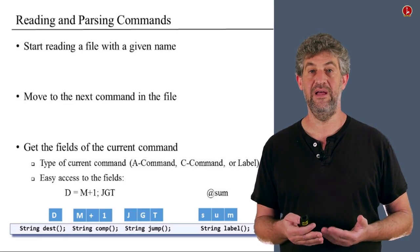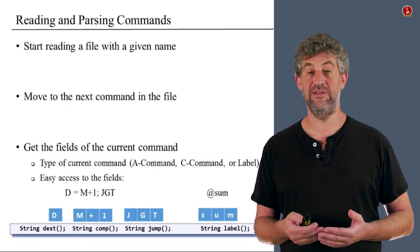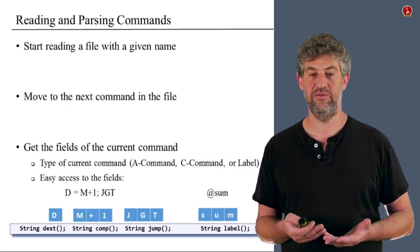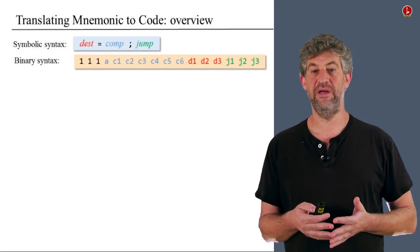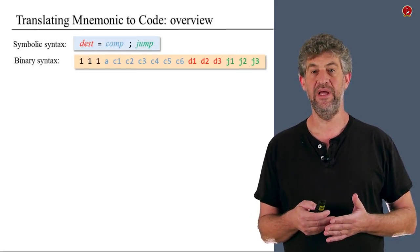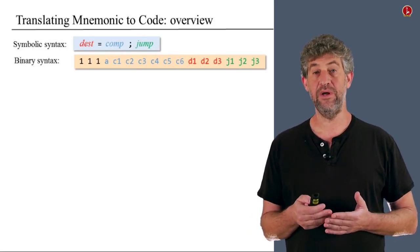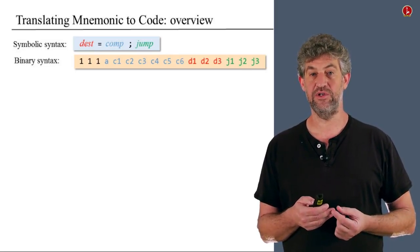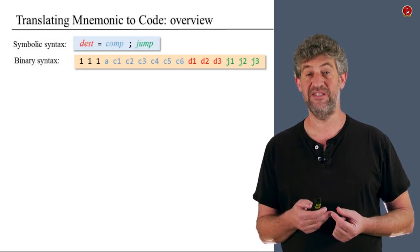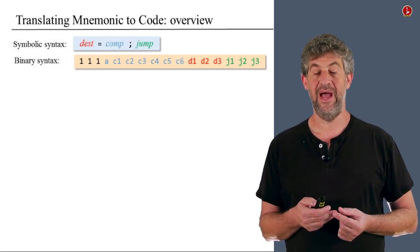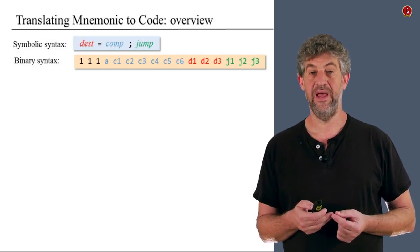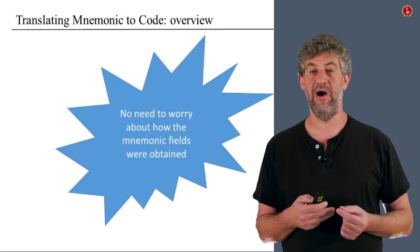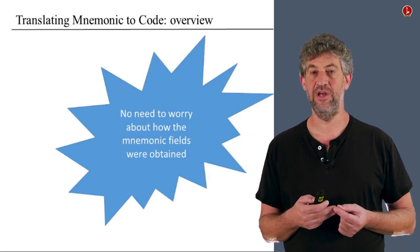The next thing we have to do is translate each component of the command into actual machine code — into binary code. Recall that in the specification of the language, each part of the assembly language command has a separate part inside the bits of the machine language command that corresponds to it. The important point is what we don't need to worry about: we don't need to worry about the way that our mnemonics were obtained.